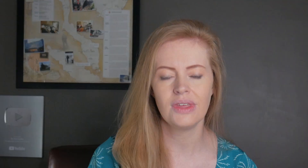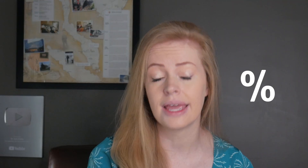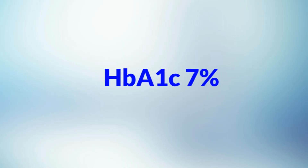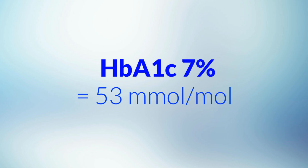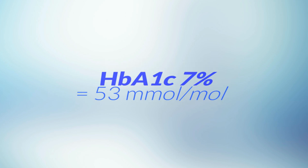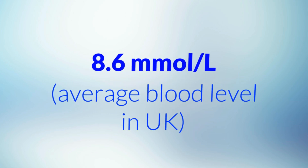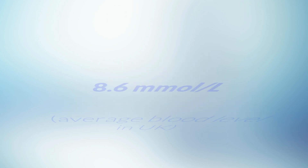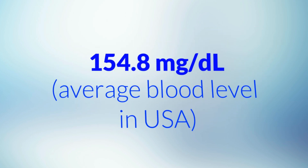Now to make it more confusing, there are two different types of units — I'll explain both as the units will differ depending on where you live. There are percentage readings and millimole per mole readings. For example, 7% is about 53 millimoles per mole, which means your sugars have on average been running at 8.6 millimoles per litre if you live in the UK, or 154.8 milligrams per decilitre if you live in the US.